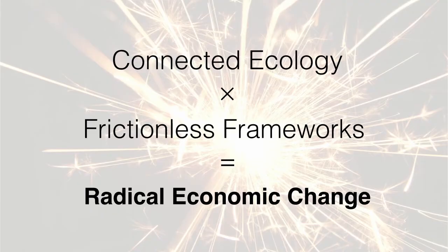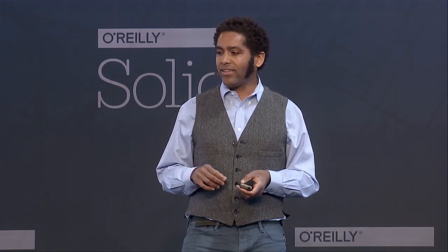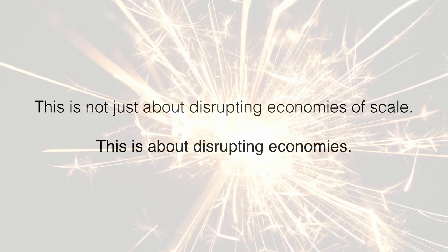So, if you're trying to create radical economic change — as all of us are — you need to take a connected ecology and a frictionless framework and bring them together. That means either creating an ecology in the first place, creating a frictionless framework, adding the two, or enhancing the connectedness of an ecology, or enhancing the frictionless-ness of a framework through tools and technology. That leads to radical economic change. This conference — this is not just about disrupting economies of scale, this is about disrupting economies. Thank you.